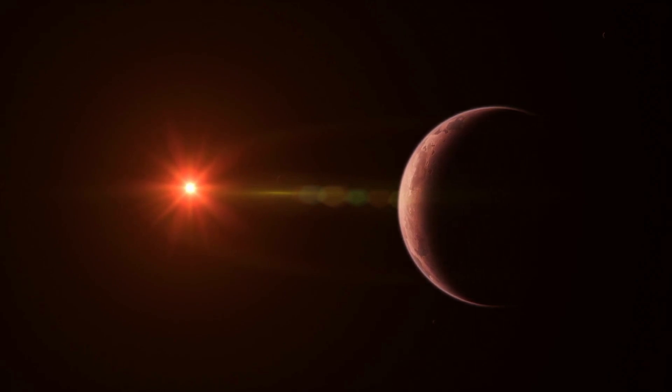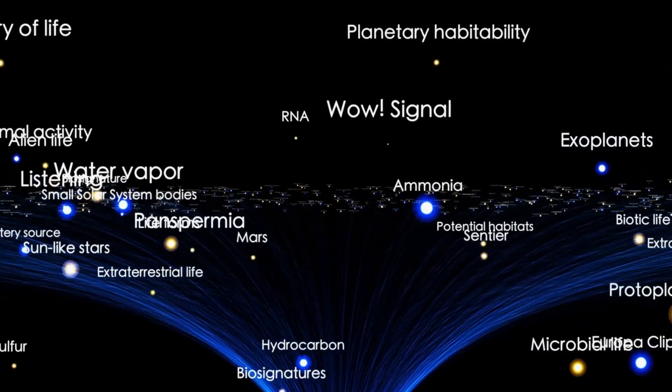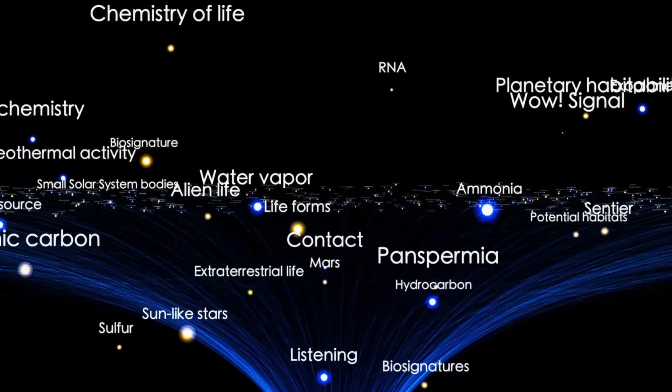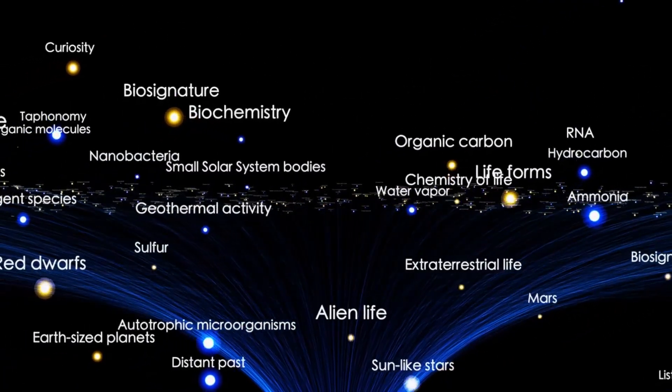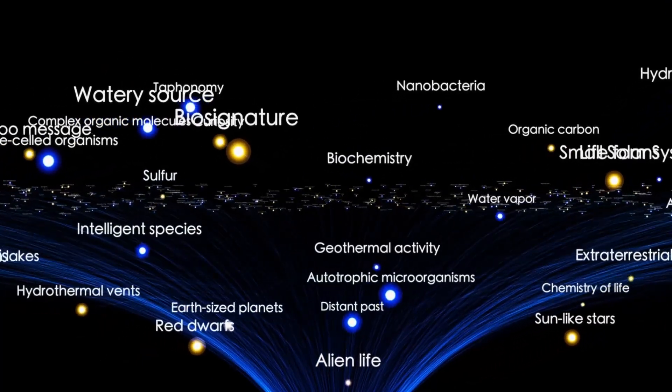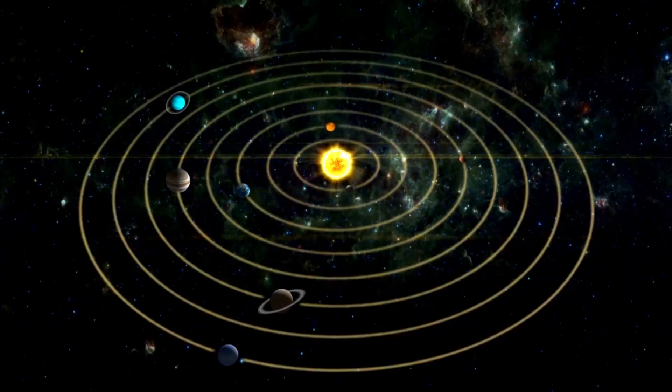In addition, exoplanets can help us understand how planetary systems formed and evolved over time. There are also important implications for the search for extraterrestrial life, as exoplanets are candidates to harbor life that can provide information about the conditions necessary for life to exist elsewhere.